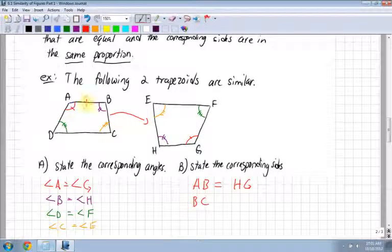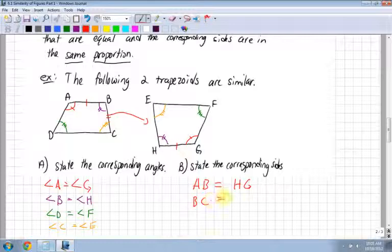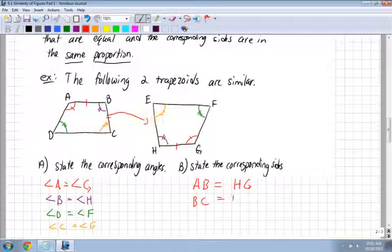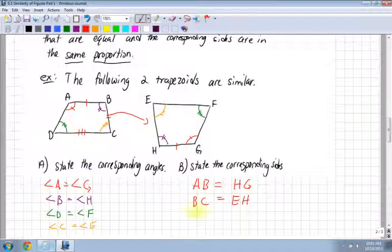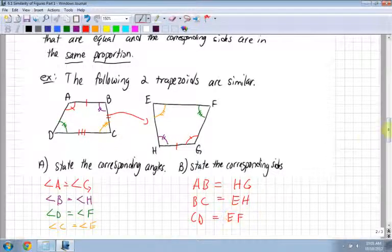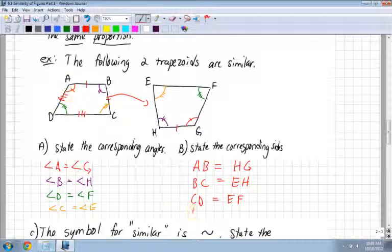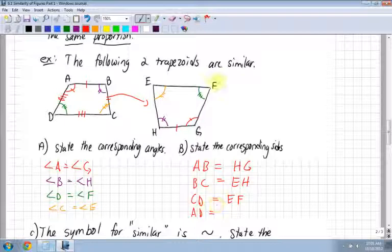Then let's look at the CD side. The bottom here becomes the top on the other one. CD equals EF. Lastly, AD is going to be the same as FG. So I've stated all the corresponding sides and all the corresponding angles.